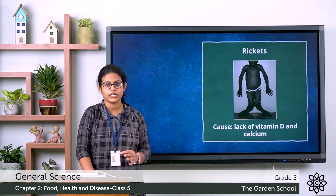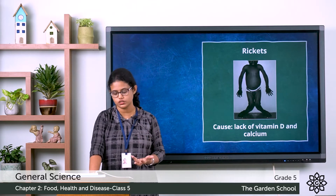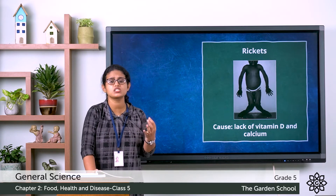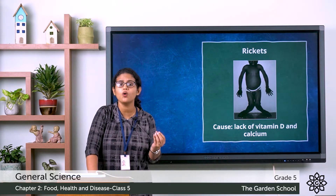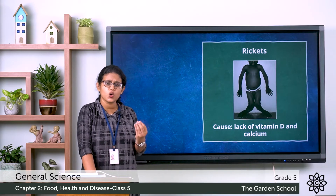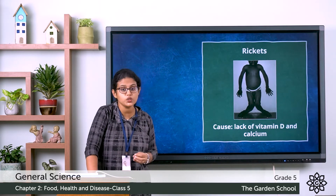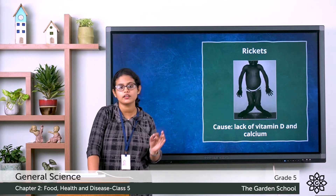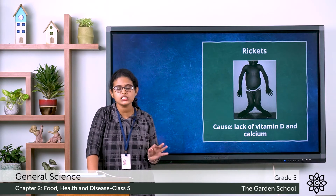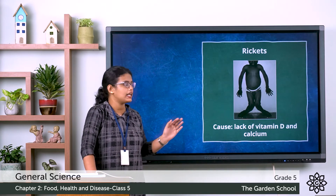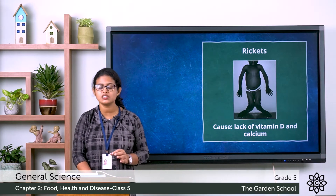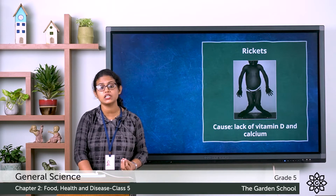The next deficiency disease is rickets — it is a bone disorder where the bones become soft and twisted. Children suffering from this disease will have bow legs. It is caused due to lack of vitamin D and calcium, which keep our bones healthy. So how can we cure this disease? By having vitamin D and calcium rich food.